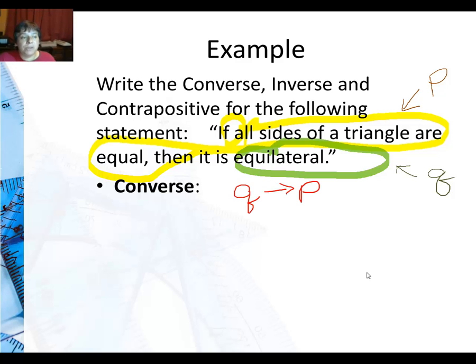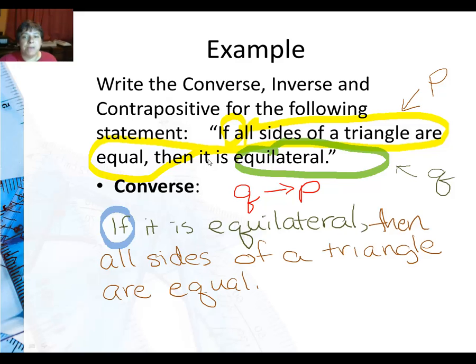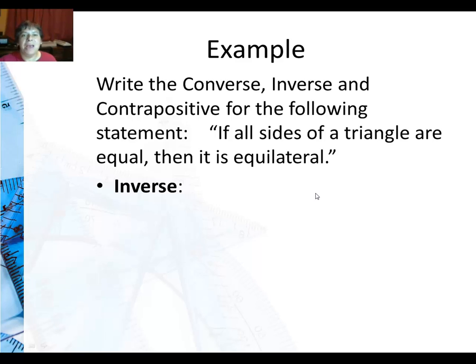To make the converse I'm going to switch them. So I'm going to say if it is equilateral. Notice how I put this part right here first with the if. Then all sides of a triangle are equal. So I took the first part that had the if and put it on the then part. That is the converse. And I will give you a reference so you can look at Q and P when you're dealing with that.